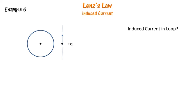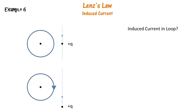Here we have a circular loop and a positive charge moving past it. When the positive charge is approaching the loop, the induced current opposes the approaching charge and flows in the clockwise direction. When the charge is moving away from the loop, the induced current opposes this movement and flows in the anticlockwise direction.